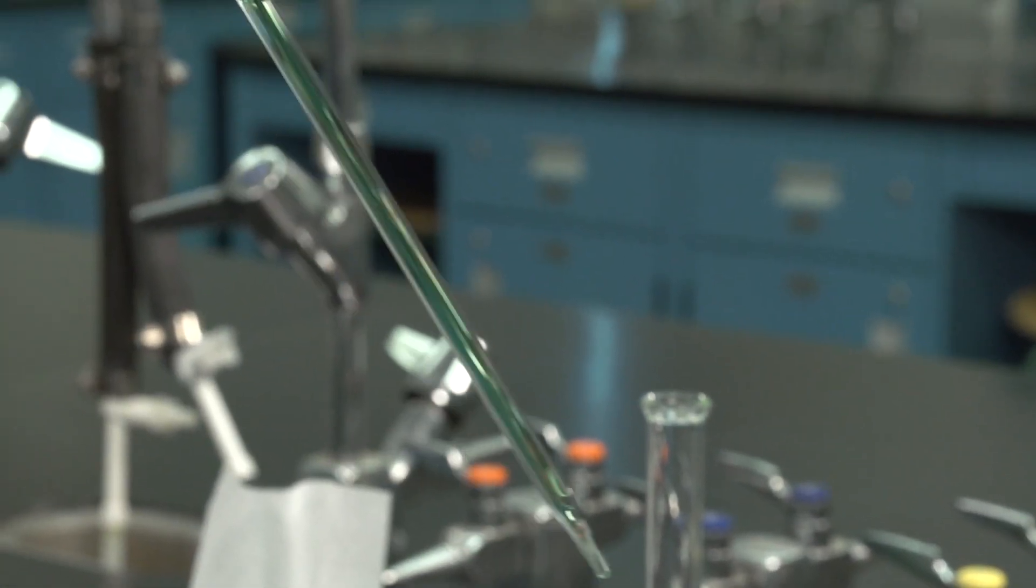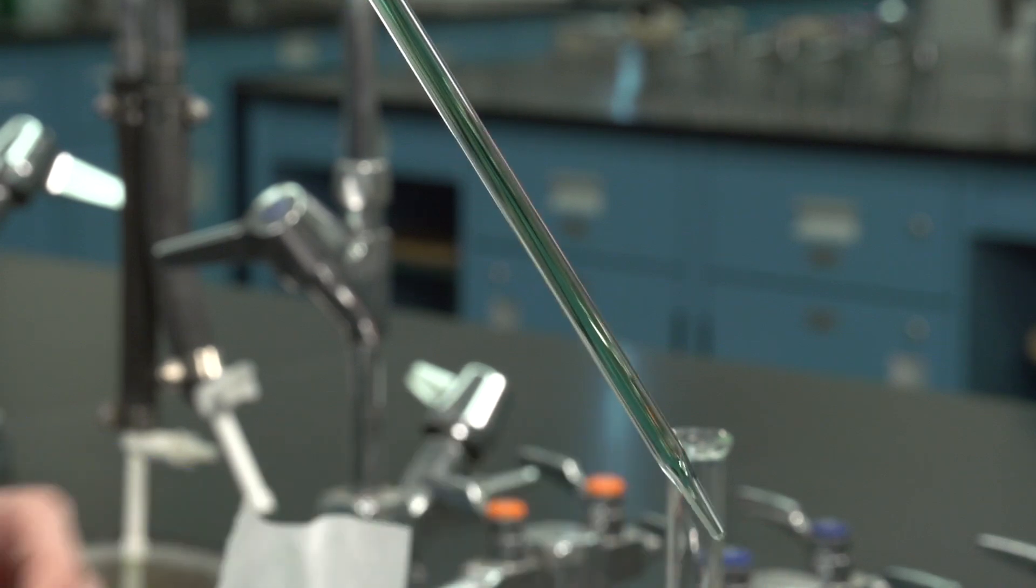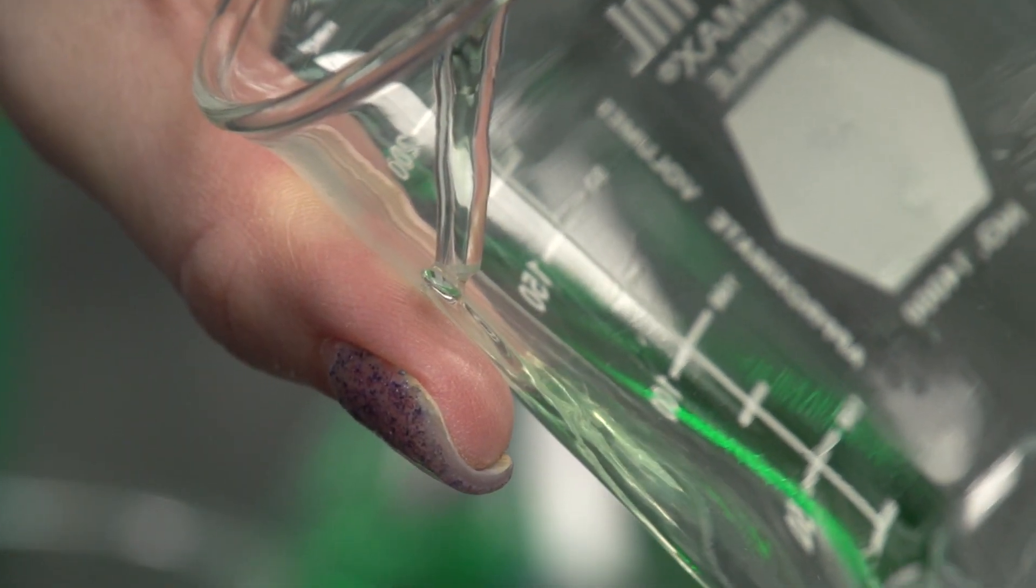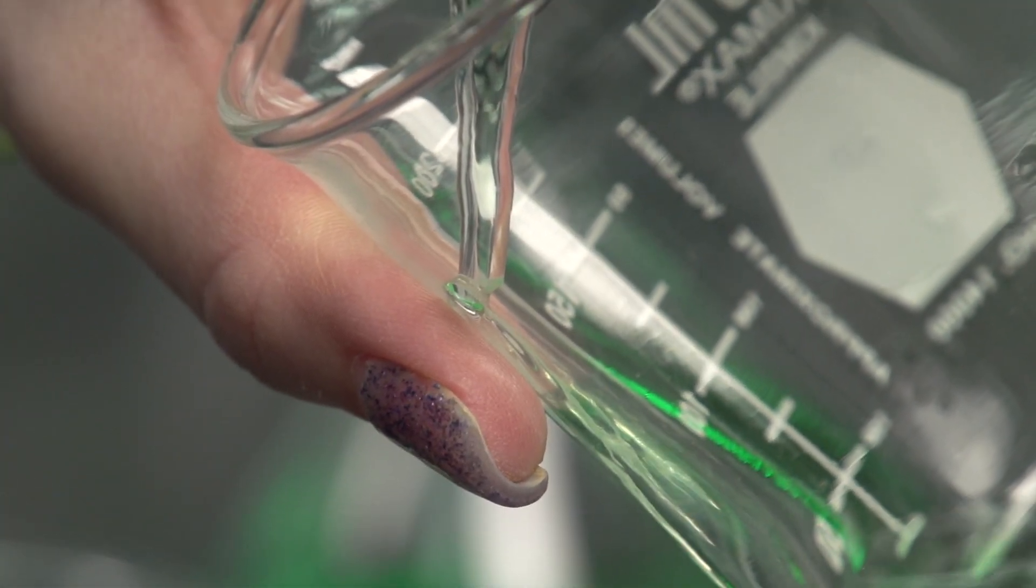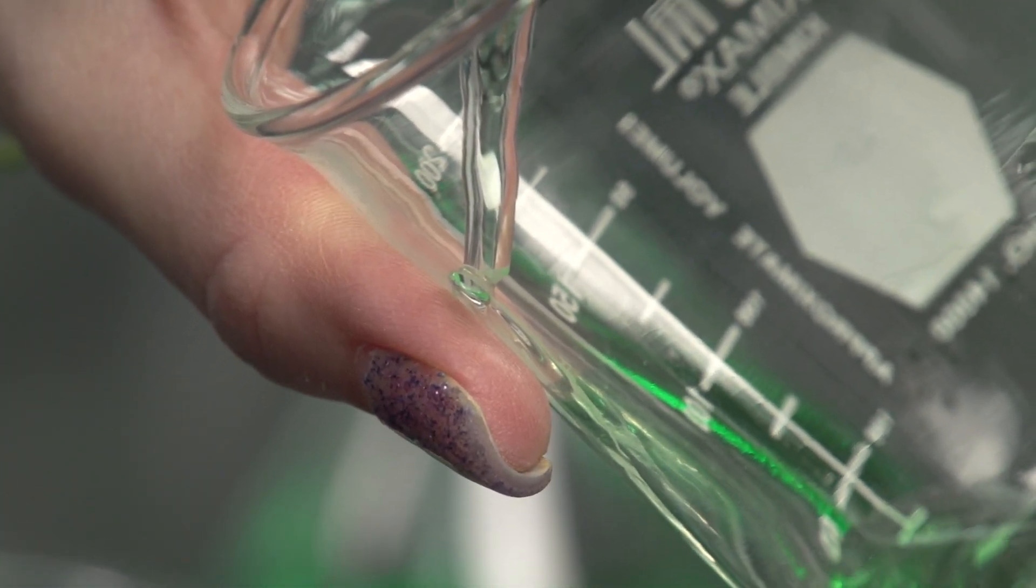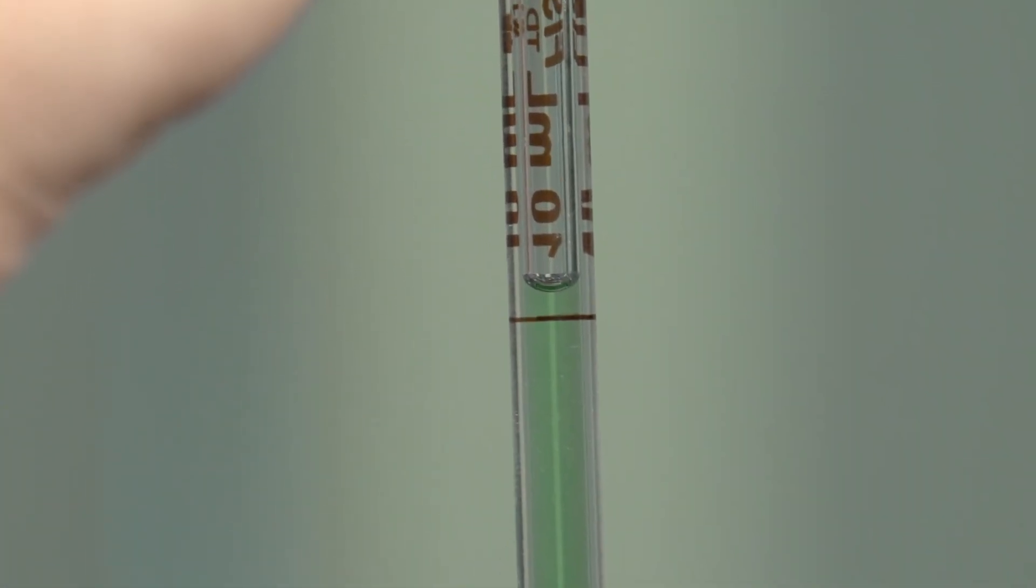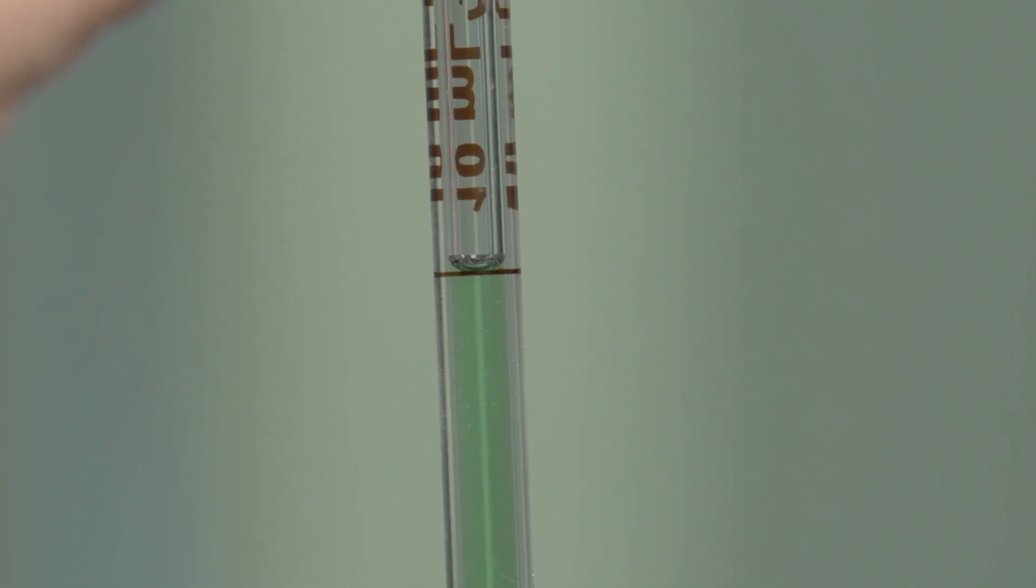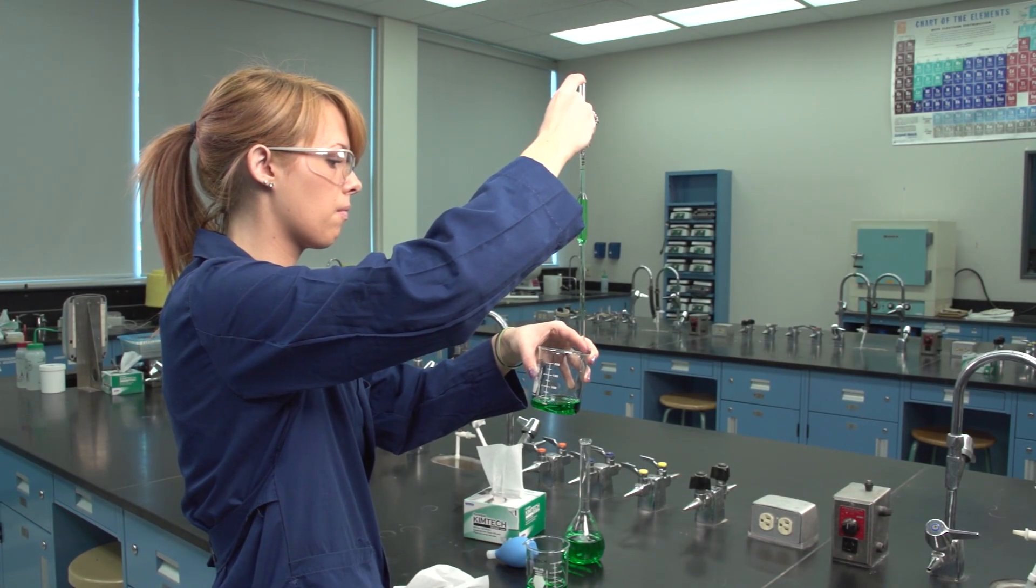Tilt the pipette slightly from the vertical position and wipe the outside of the lower stem with lint-free tissue to remove any adhering liquid. Hold the pipette vertically with the tip touching the inner wall of a waste vessel and slowly allow the liquid level to drop by slightly decreasing the finger pressure, halting further flow when the bottom of the meniscus coincides exactly with the top of the graduation mark. The pipette must be held vertically with the mark at eye level.